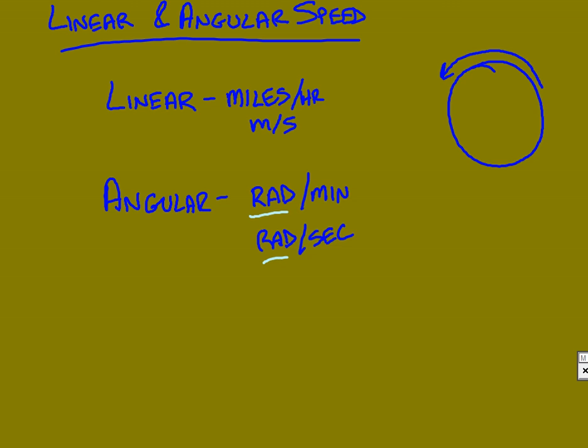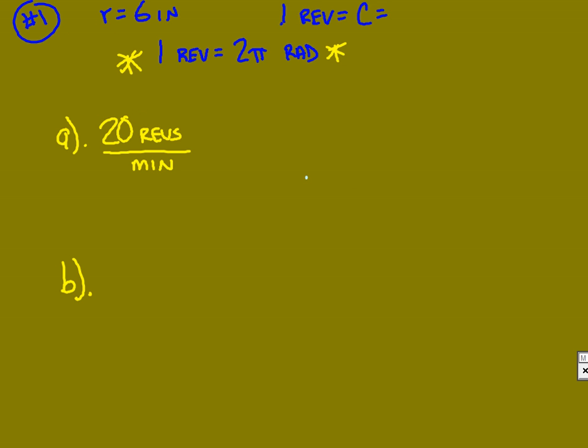So to show you how this is going to be done, we have an example you have in your notes at home. All we have was a bike tire that was 6 inches per radius and it was going at 20 revolutions per minute. Now this is the steps that we want to take. First things first is to mention and write down what we start with, which was 20 revolutions per minute.